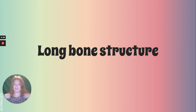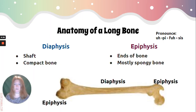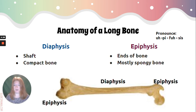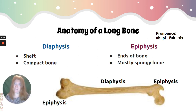Now, what about long bones? Remember: the clavicle, the bones of your arms, hands, feet, and legs. The main structure is the diaphysis — that's the shaft of the bone — and it's made up of compact bone. Then we have the epiphysis — those are the ends — and that is mostly made of spongy bone, though as you can see in the picture, it's still surrounded by compact bone.